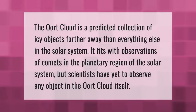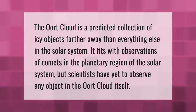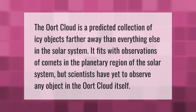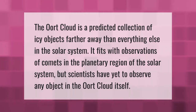The Oort Cloud is a predicted collection of icy objects farther away than everything else in the solar system. It fits with observations of comets in the planetary region of the solar system, but scientists have yet to directly observe any object in the Oort Cloud itself.